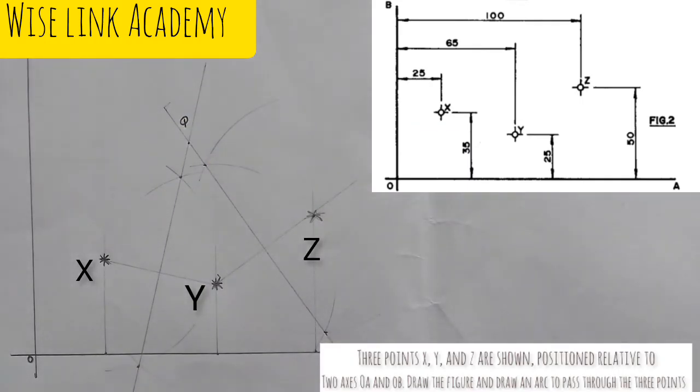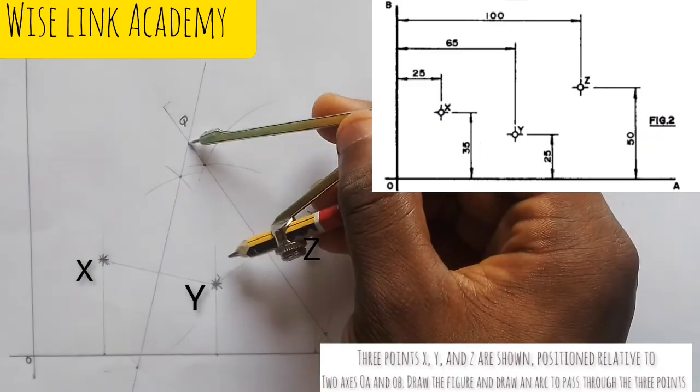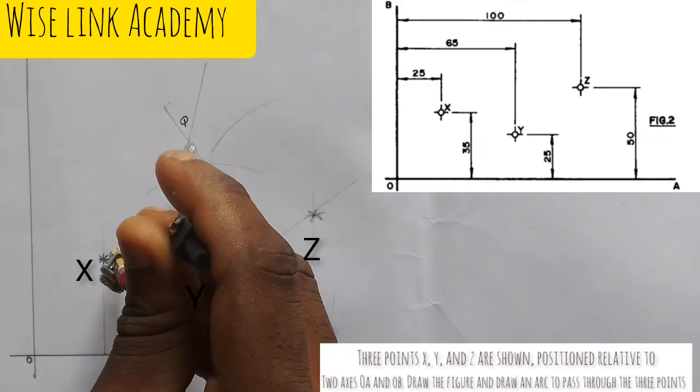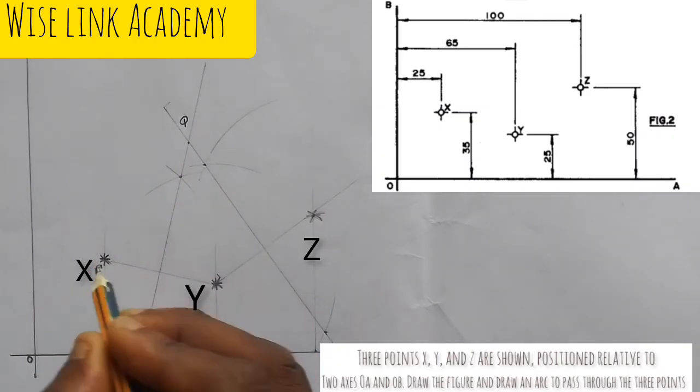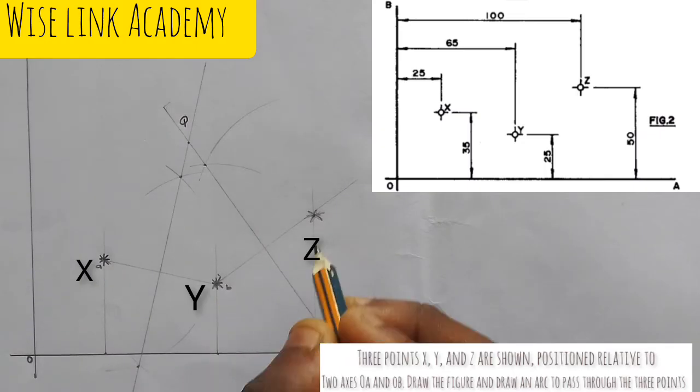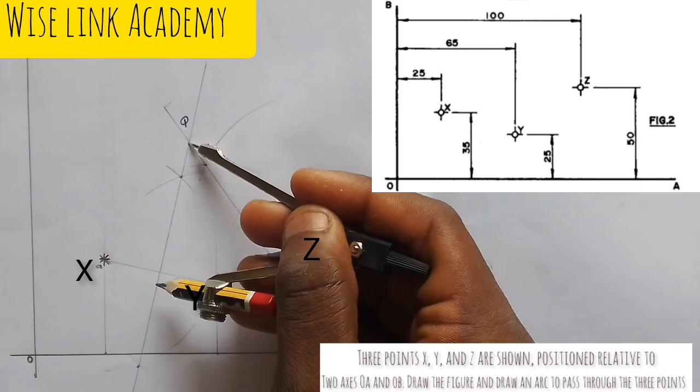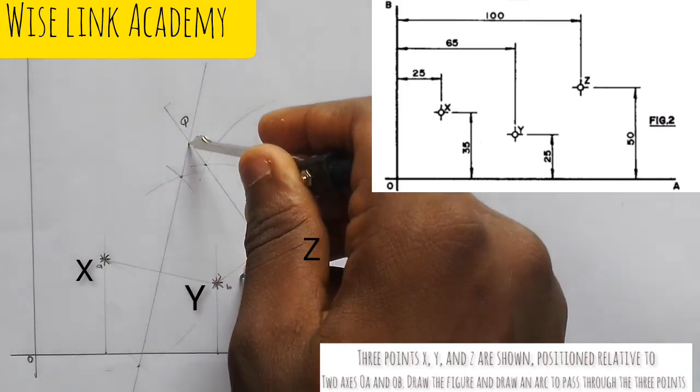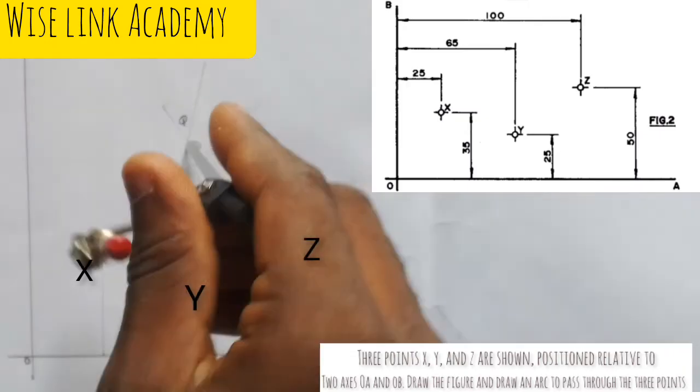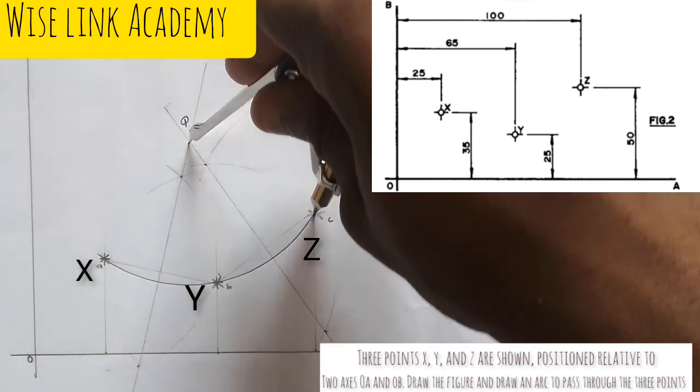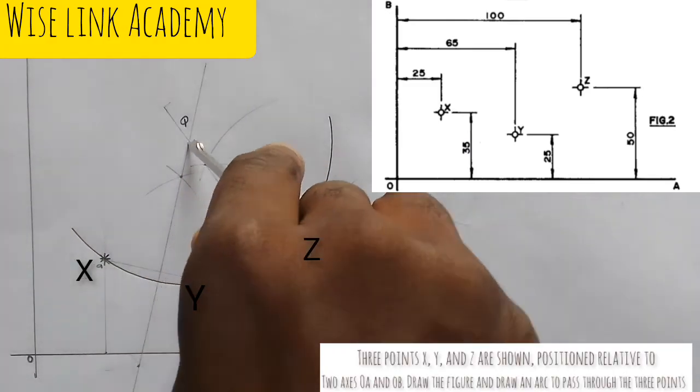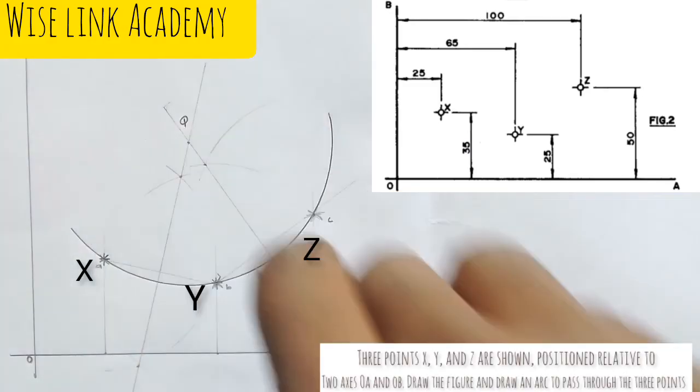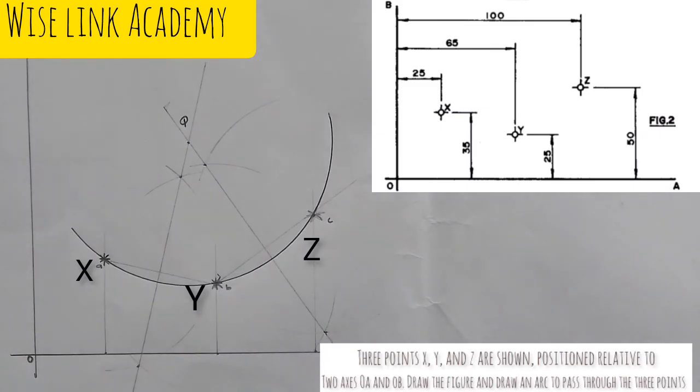So where these two arcs meet at this point, I call that point Q. So at that point Q, I will take my compass at that point Q and move it to point, let's say this is point A, point B, and point C. So I'll take it at this point, move it to point A, and draw my arc that will connect them, this way. As you can see that the arc connects the three together. So here is what they ask us to do.